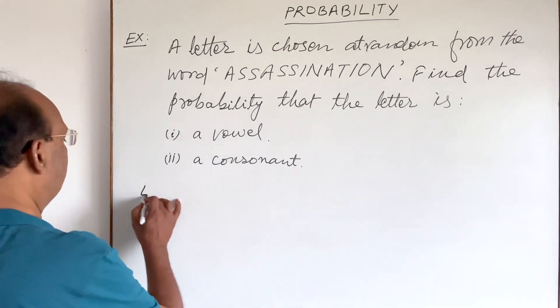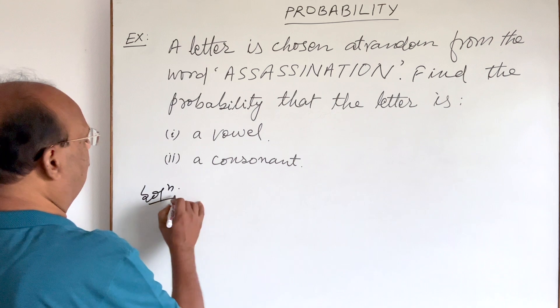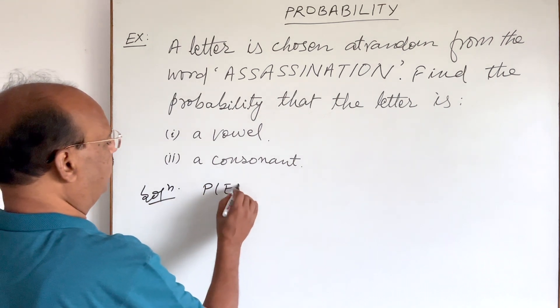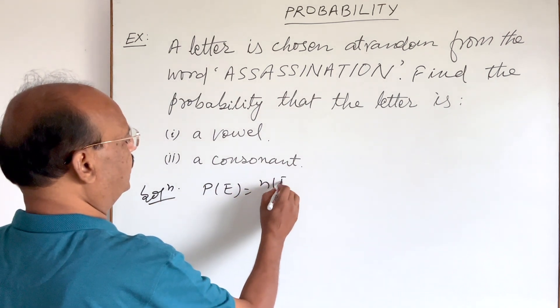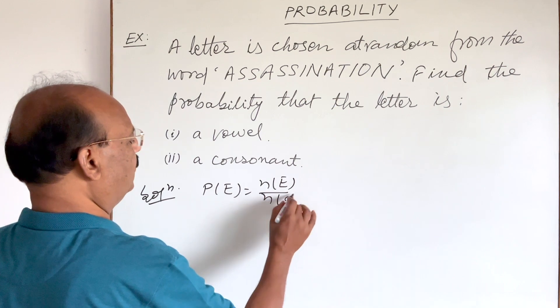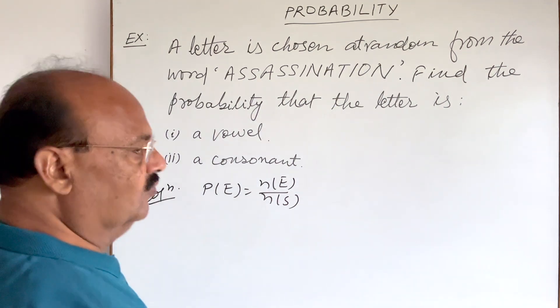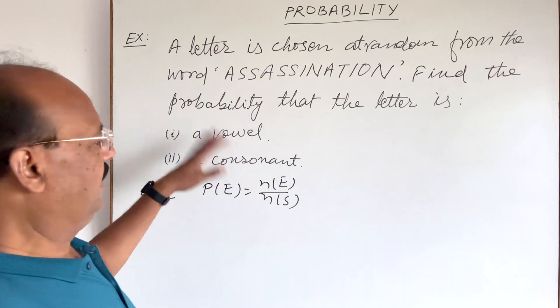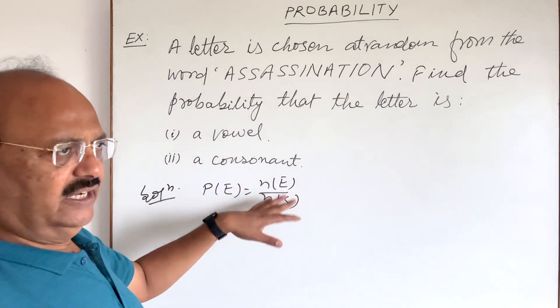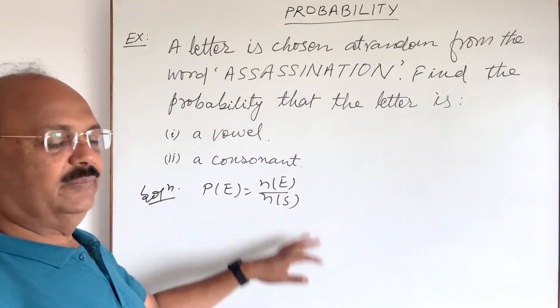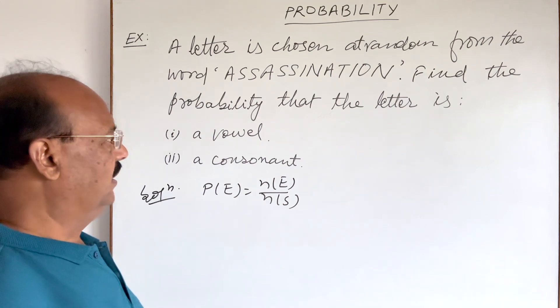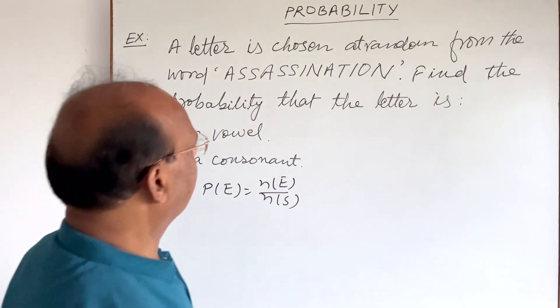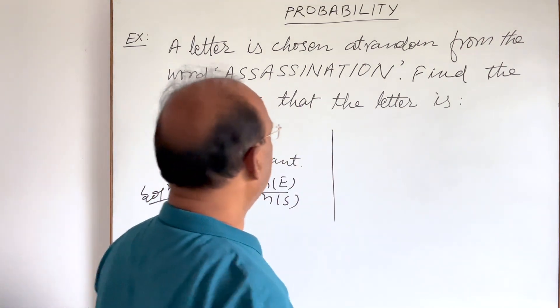We know that we will use the formula: probability of any event E is equal to n(E) divided by n(S). In both cases, we have to find the value of n(E) and n(S). However, n(S) will remain the same in both cases. Let us see how to get n(E) and n(S).